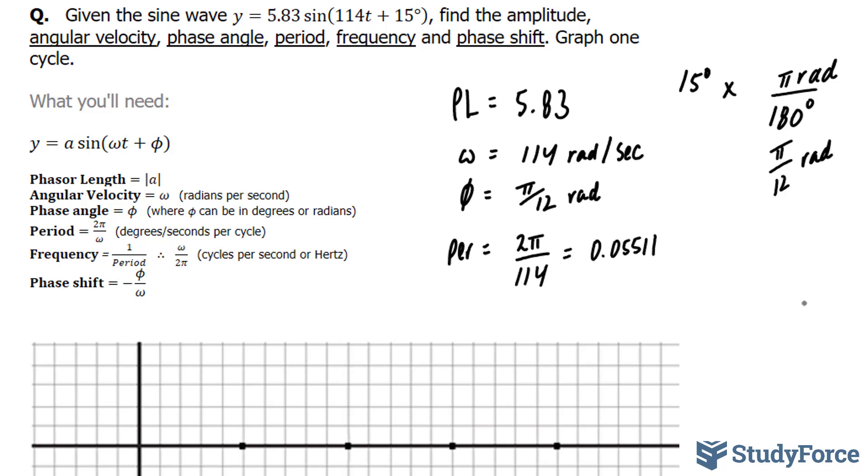The units for period should be seconds per cycle. Even though I've written degrees down, we should remove that. So here we have this many seconds per cycle.